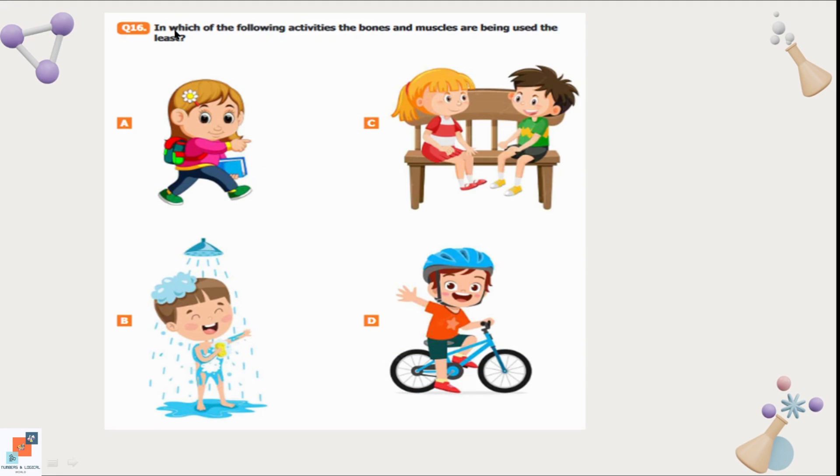Question number 16: In which of the following activities the bones and muscles are being used the least? Least means minimum. Option A is walking. Option B is taking a bath. Option C is sitting. And option D is riding a bicycle. In option C, when we are sitting down on a bench, we are using our bones and muscles least. That is the correct option. In rest of the three activities we have to move our legs or hands or body. So bones and muscles are used more as compared to option C.